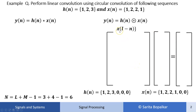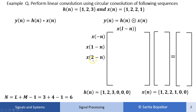Now we can perform circular convolution by the matrix method. For circular convolution, x[l - n] means we first invert or fold or reverse the sequence — that is x[-n] — and then add a shift l. The shifts go from l = 1 to n - 1, where n is 6, so l goes from 1 to 5. So we have x[-n], x[1-n], x[2-n], x[3-n], x[4-n], and x[5-n].